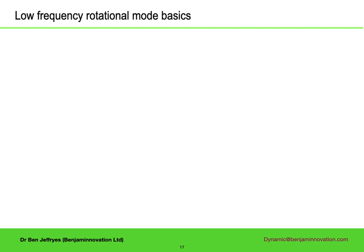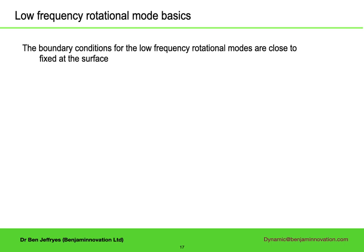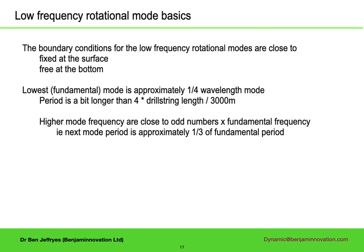So what are the low frequency modes? The drill string normally has a controller trying to turn it at constant speed at the surface, so this is close to a fixed boundary condition. At the bit, the reflection coefficient is close to 1. If the drill string were constant cross-section all the way down, the fundamental would simply be one quarter of a wavelength, and the higher modes are odd numbers times the fundamental frequency. Equivalently, the periods are the fundamental period divided by an odd number.